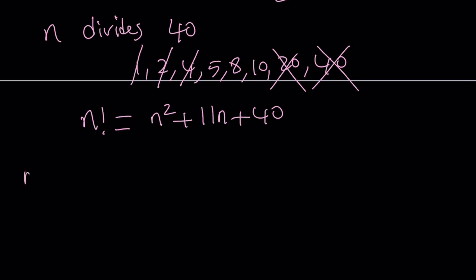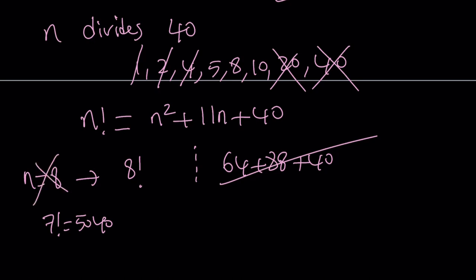Let's start with 8. If n is equal to 8, we get 8 factorial on one side. And on the other side, we get 64 plus 88 plus 40. And think about it. 7 factorial is 5,040. When you multiply that by 8, you're going to get something like 40,000. And obviously, this number is going to be much, much smaller. So n equals 8 is not going to work either.